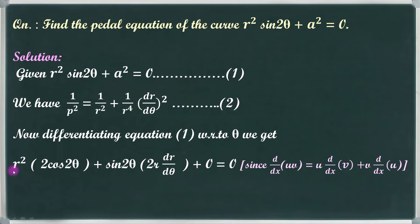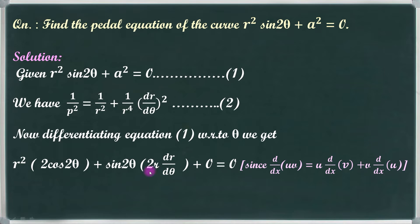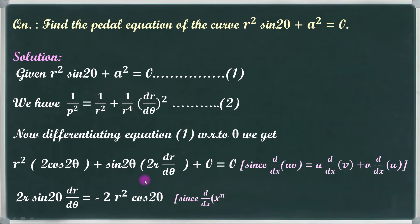The first term r squared multiplied by the differential of sin 2θ: the differential of sin aθ is cos aθ times a, so the differential of sin 2θ is cos 2θ times 2. Then the second term is sin 2θ multiplied by the differential of r squared with respect to theta.